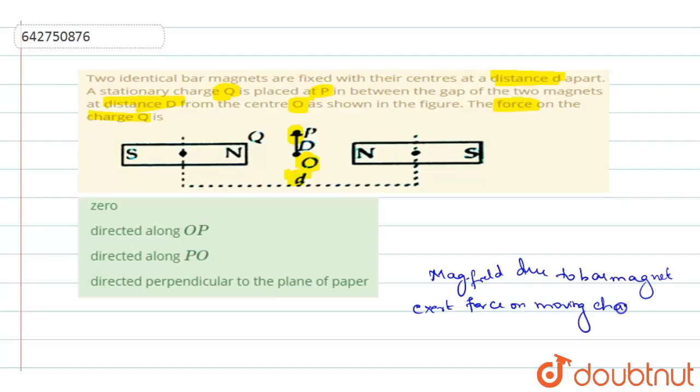So whichever moving charges you have, on those charges the magnetic field due to the bar magnet will be acting, but not to the stationary charges. And so when the charge is at rest, the total force or the net force acting on charge q will be equal to 0. So F equals 0 will be the right answer. Option A will be the right answer.